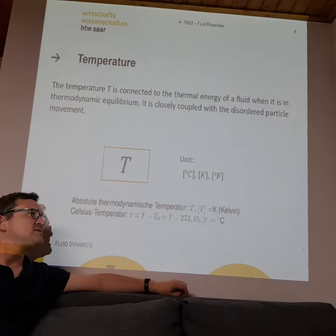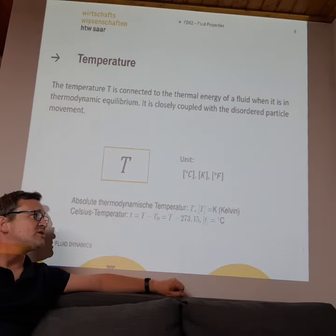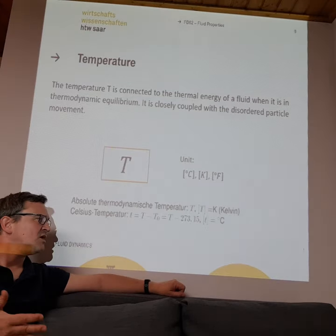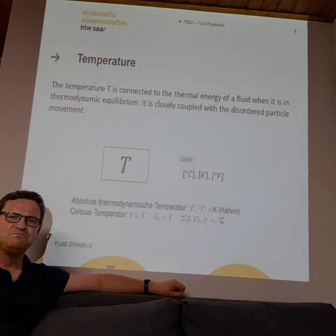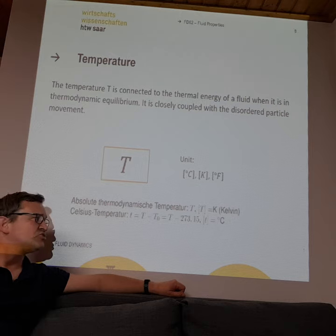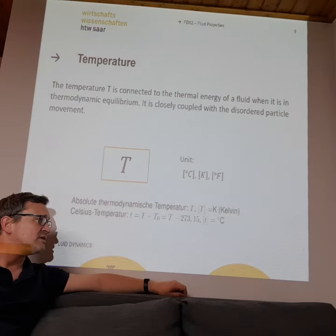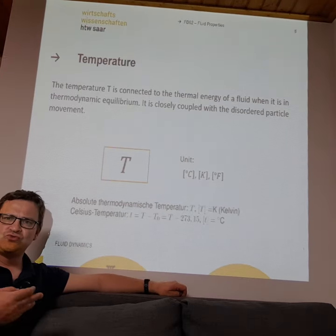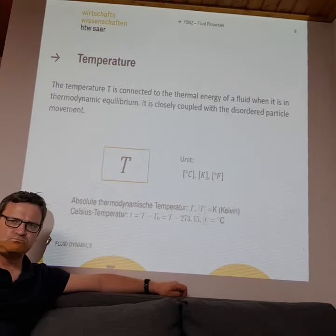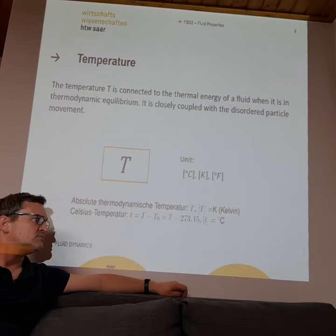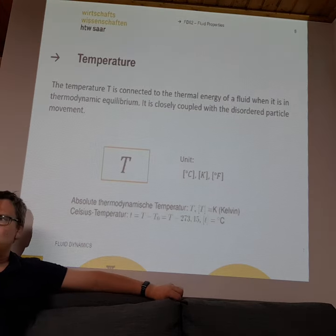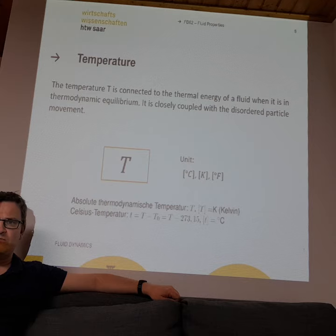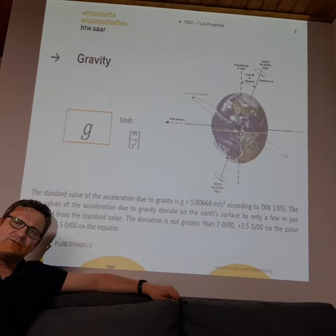To convert from Celsius to Kelvin, you just add 273.15. For example, if you have a temperature of 20 degrees Celsius and you want it in Kelvin, you add 273.15 to 20 and you get 293.15 Kelvin. So temperature is the most important state variable.